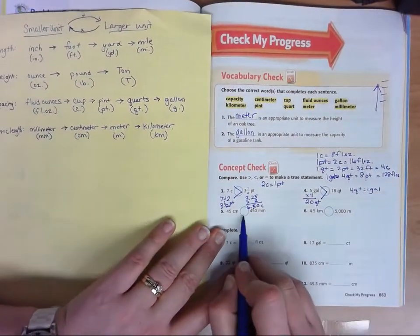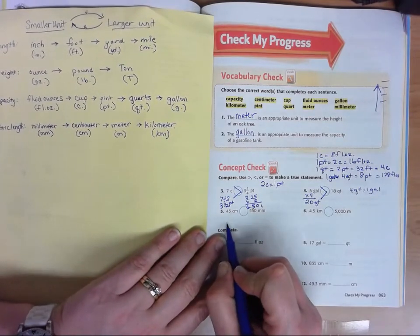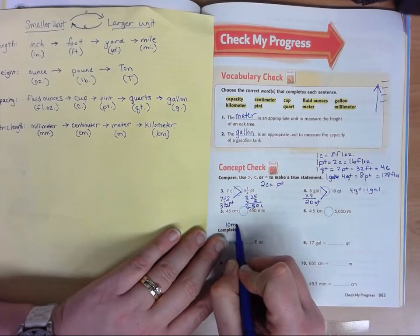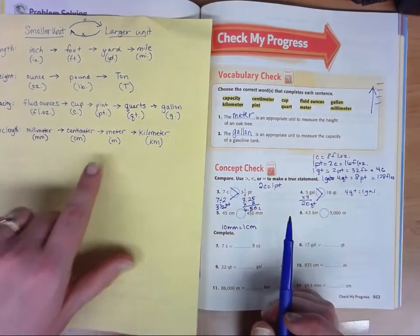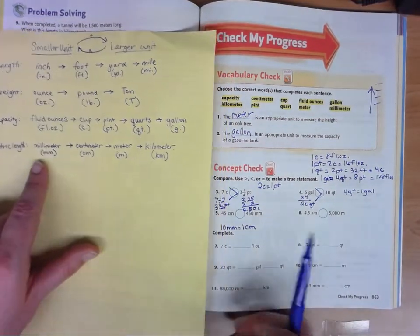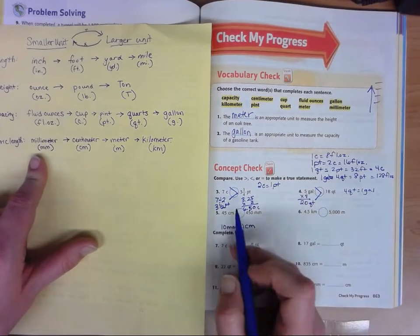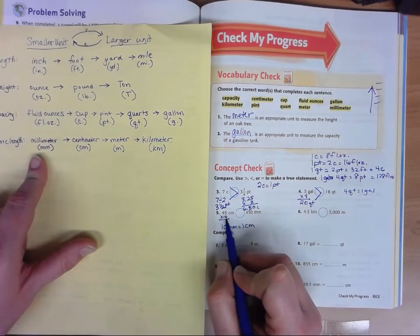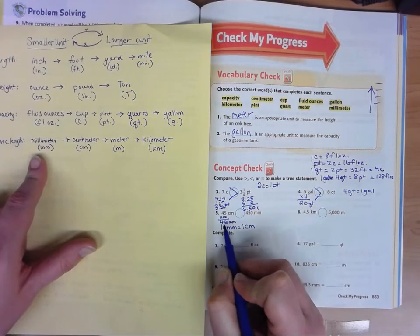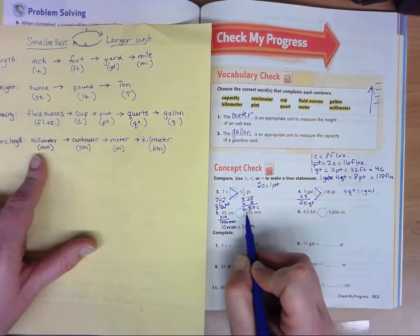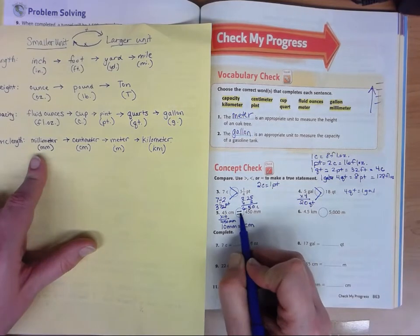If we look at centimeters to millimeters, we know that there was 10 millimeters in one centimeter and centimeters are larger. So we could go 45 times 10, and if we do that, we get 450 millimeters. So what's bigger, 450 or 450? They're equal.